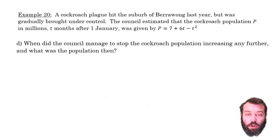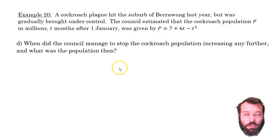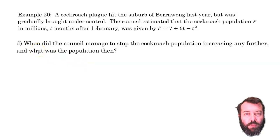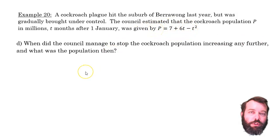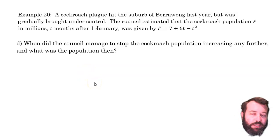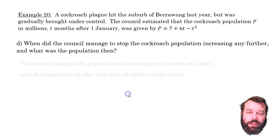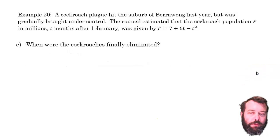When did the council stop the cockroach population increasing any further? We just stumbled across that — it's the 1st of April. If we hadn't, we'd let the derivative equal 0: solving 6 − 2t = 0 gives t = 3. Substituting into the original function tells us the population was 16 million — which we'd already found accidentally.